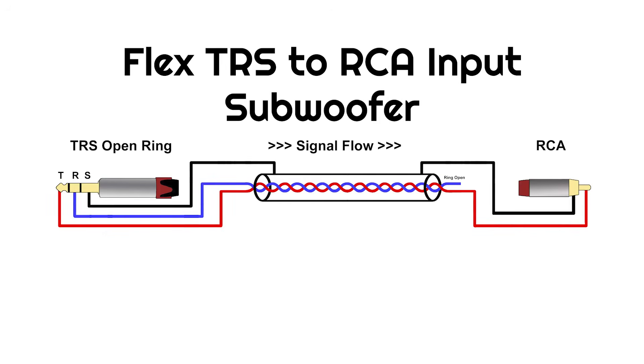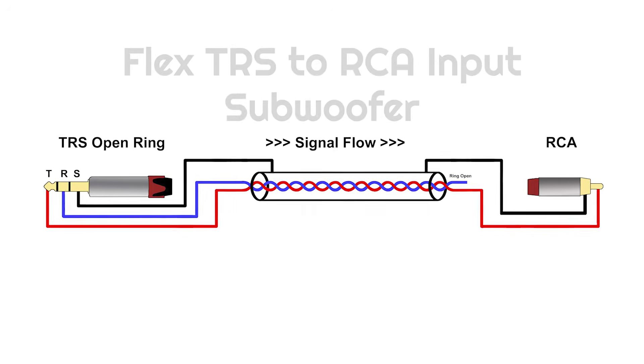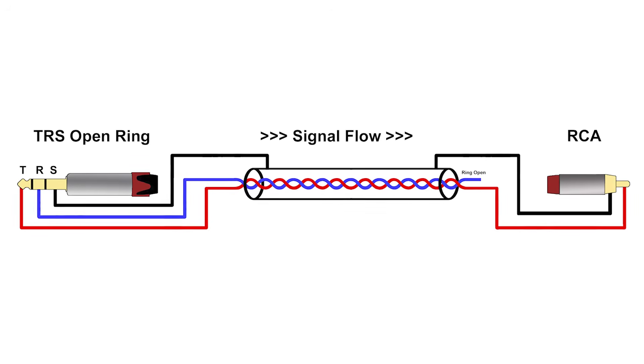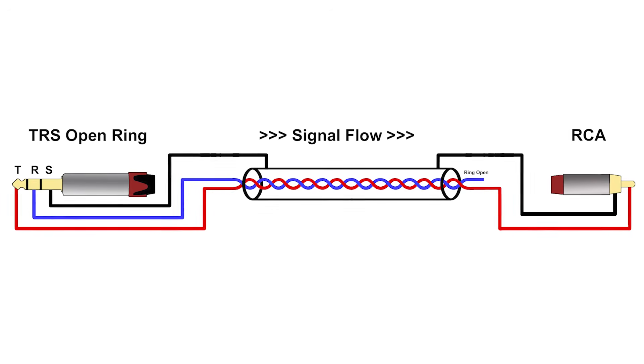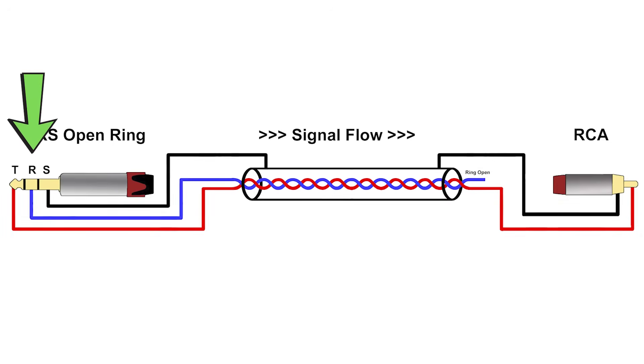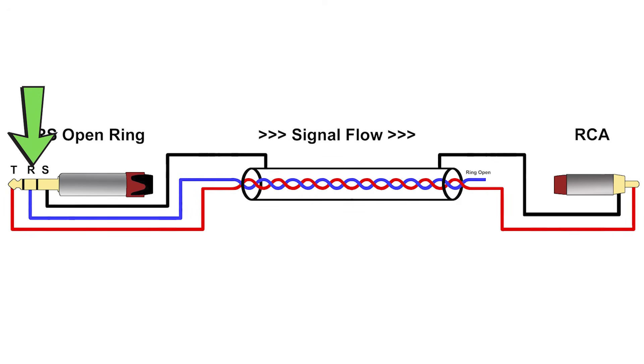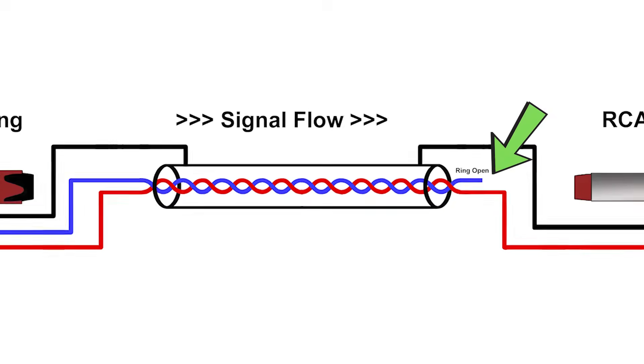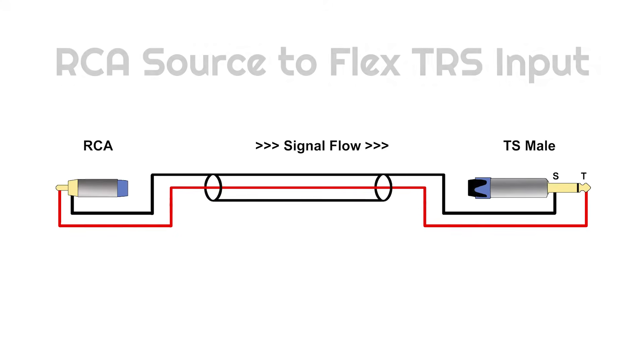Connecting your Flex TRS to a subwoofer that only has RCA single-ended inputs requires a properly configured TRS to RCA cable. When selecting your cable, be sure the negative signal line coming from the TRS connector is left open at the RCA connector.